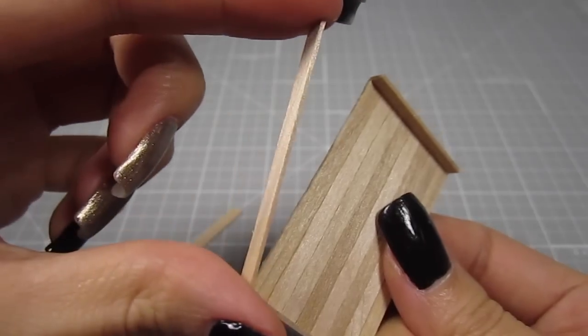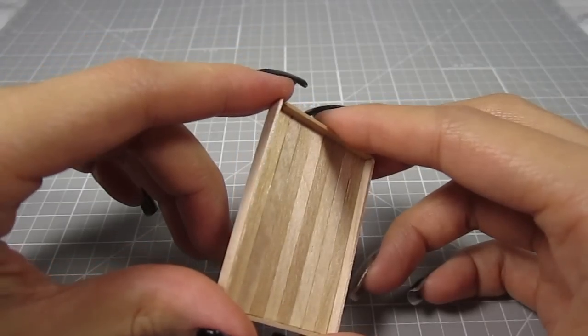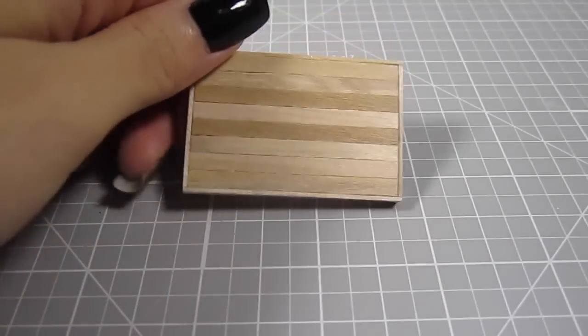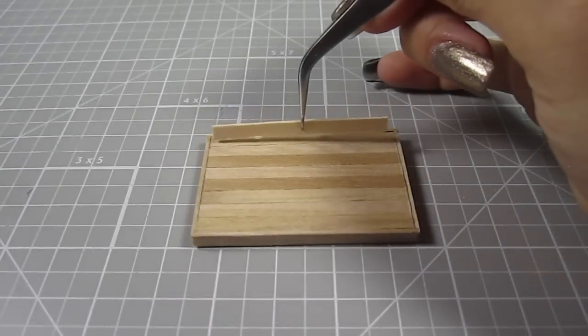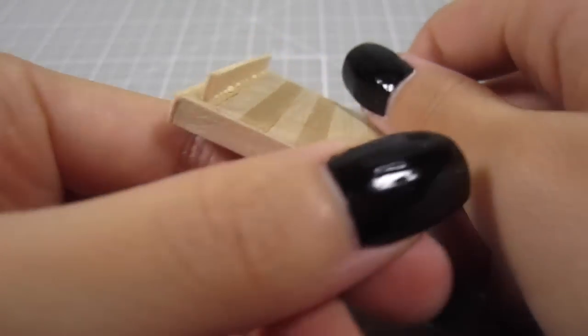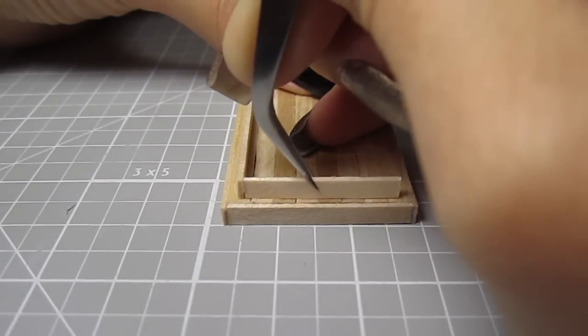Do the same for the longer sides. Once that's all dry, turn the tray over and cut off a 1.75 inch length of coffee stirrer and glue it onto the back. Make sure it's close but not touching the edge of the tray. Then cut 2 1 inch pieces and glue them to the shorter sides.